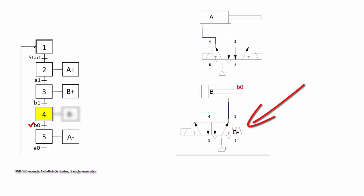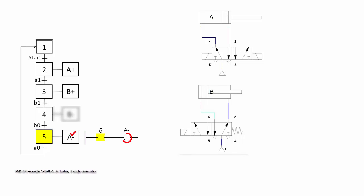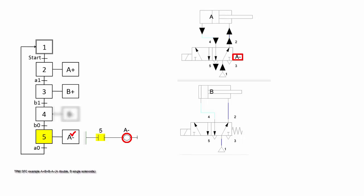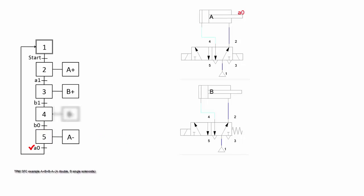When b0 is activated, step 4 is off and step 5 is on, but B minus stays. At step 5, A minus is activated and cylinder A retracts. When a0 is activated, step 5 is off and the initial step 1 is on, but A minus stays.